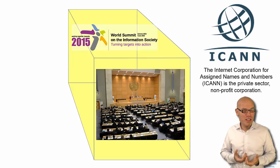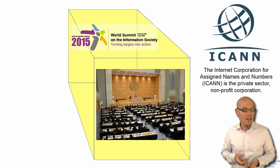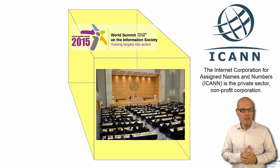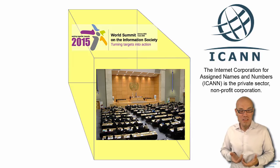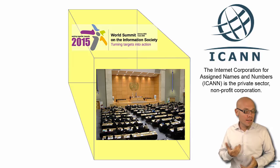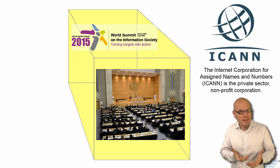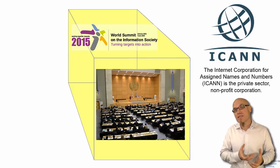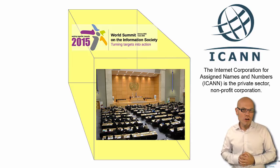ICANN is located in Southern California because originally this job was done by an individual — a computer scientist called John Postel, who studied at UCLA and then in the late 1970s joined the University of Southern California, where he did this work as, as he said himself, a side job — until his premature death in 1998 at the age of 55. After he passed away, this job was passed on and ICANN was created as a private sector, non-profit corporation.